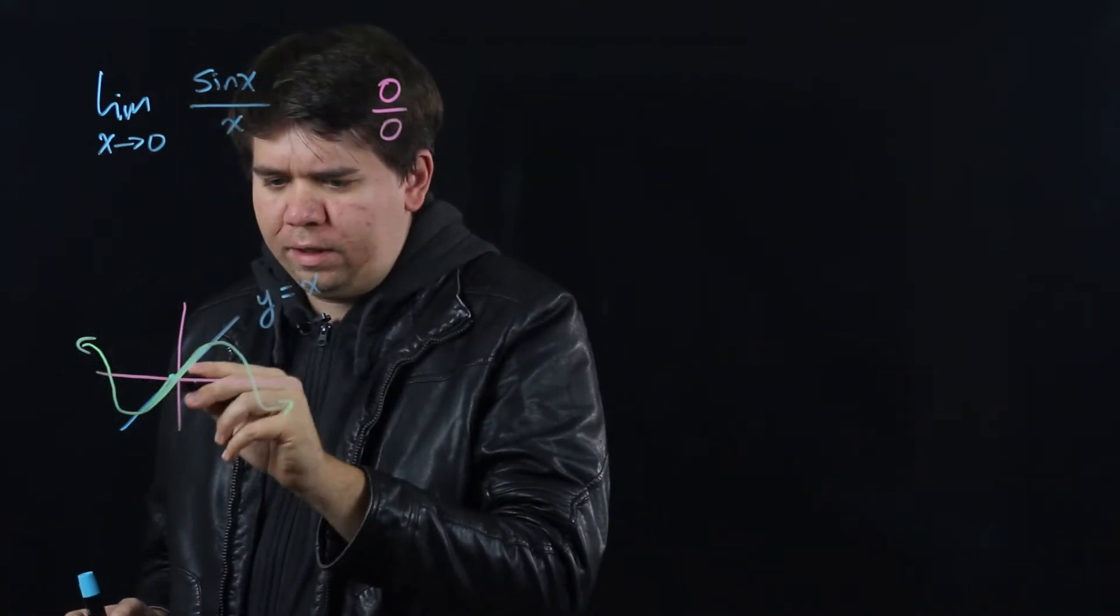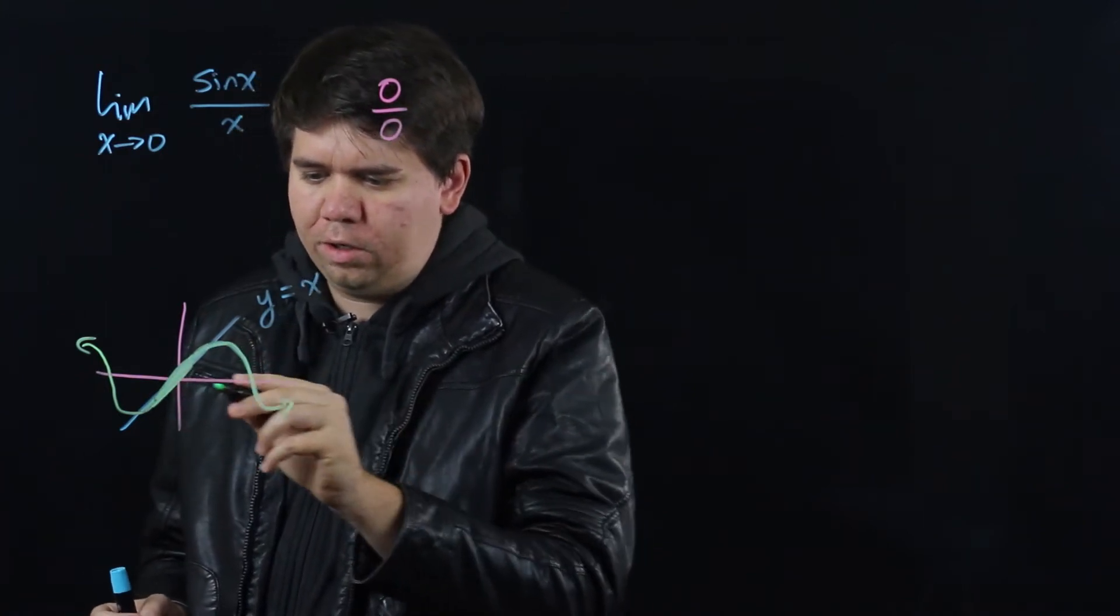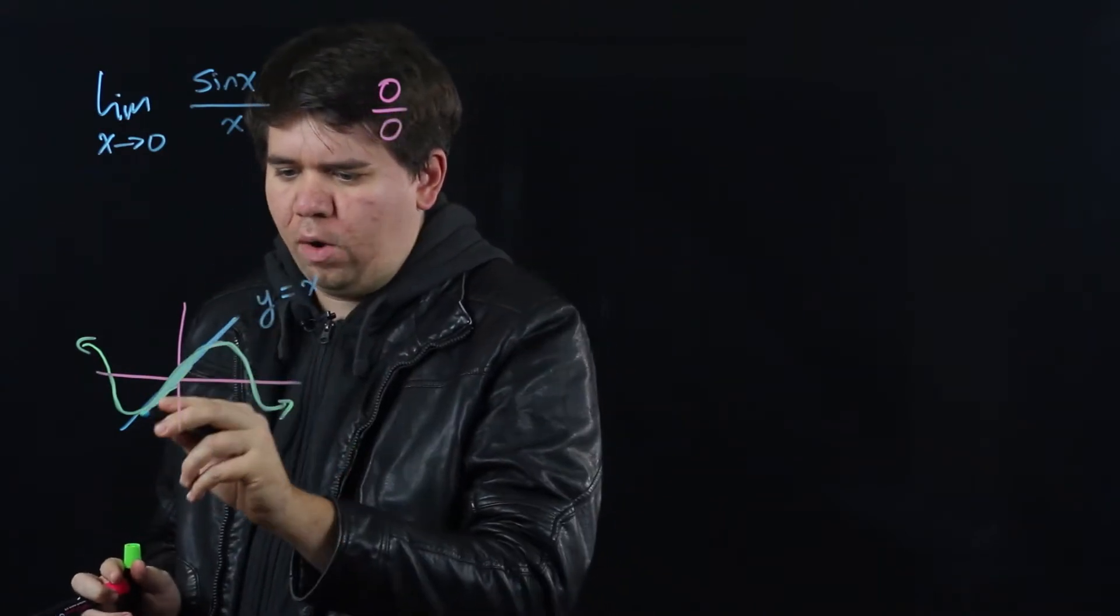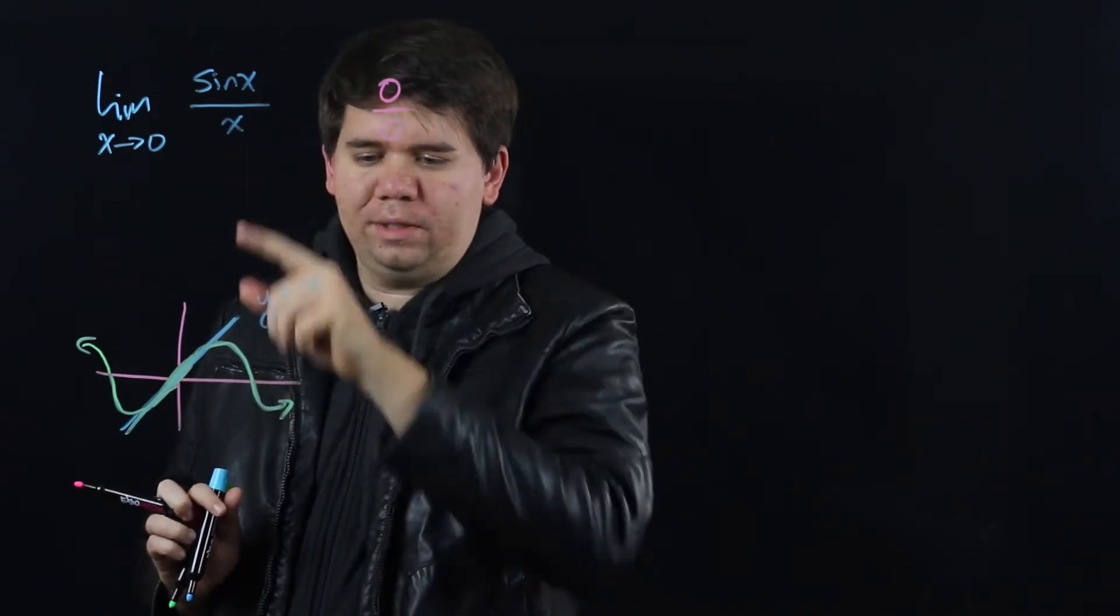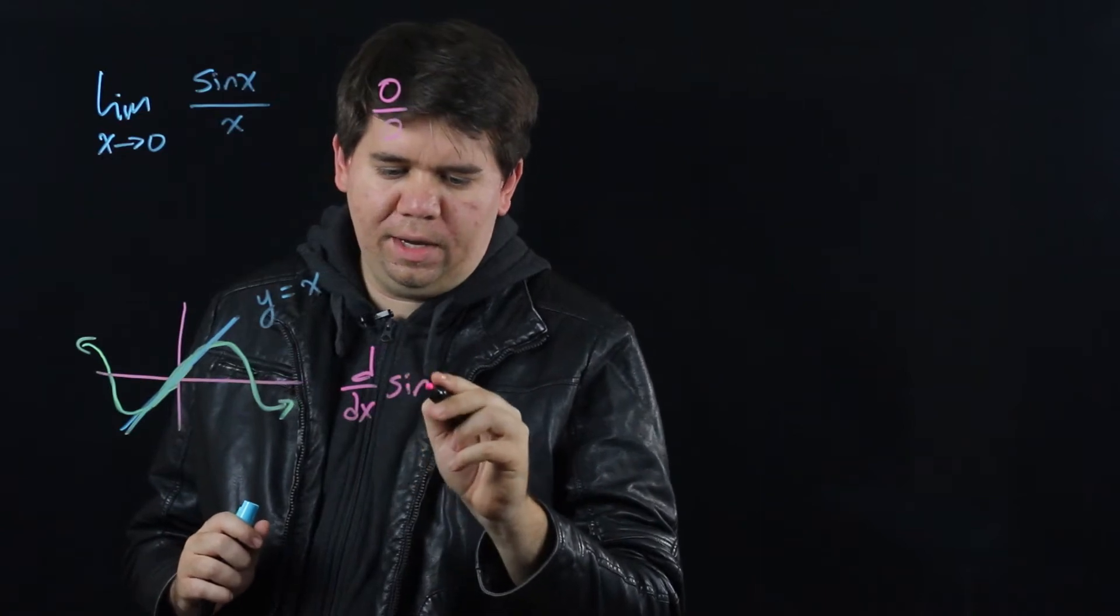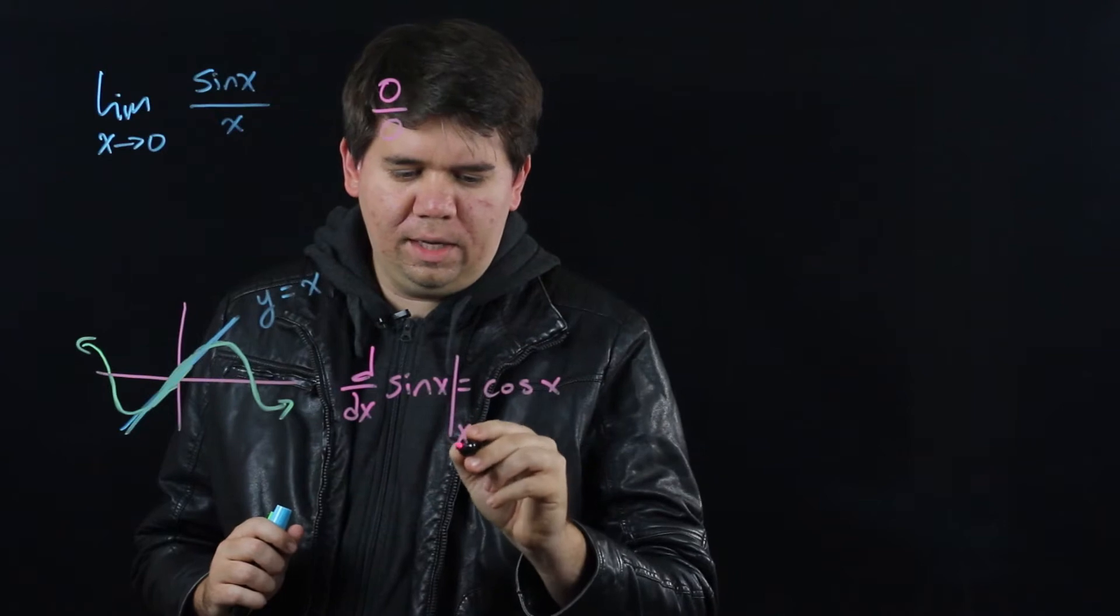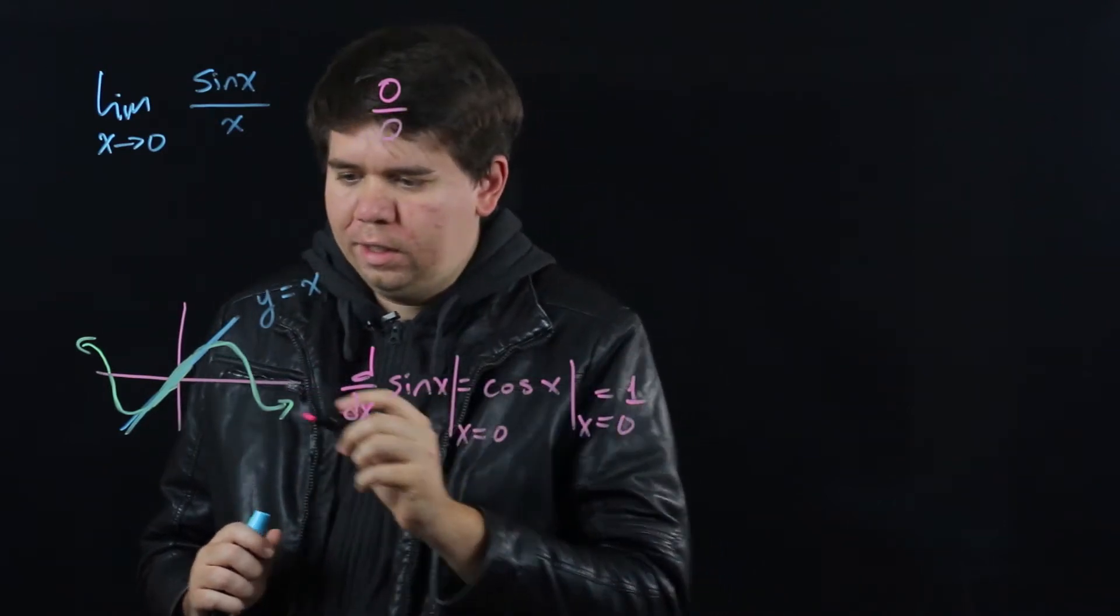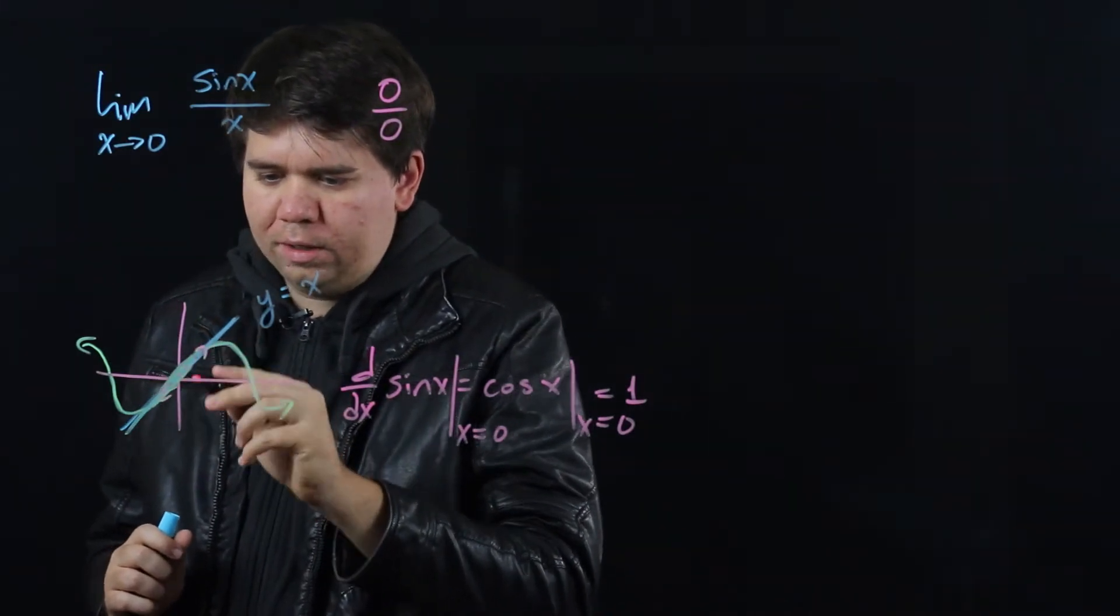If we draw this carefully, this should also have slope 1 very close to 0. When you're close to 0, the slope of sine of x should also be 1. How do I know that? Well, I think about the derivative of sine of x. The derivative of sine of x is cosine of x, and so if I figure out what that is at x equals 0, that will just be 1. So this slope for both of them right here close to 0 is 1.